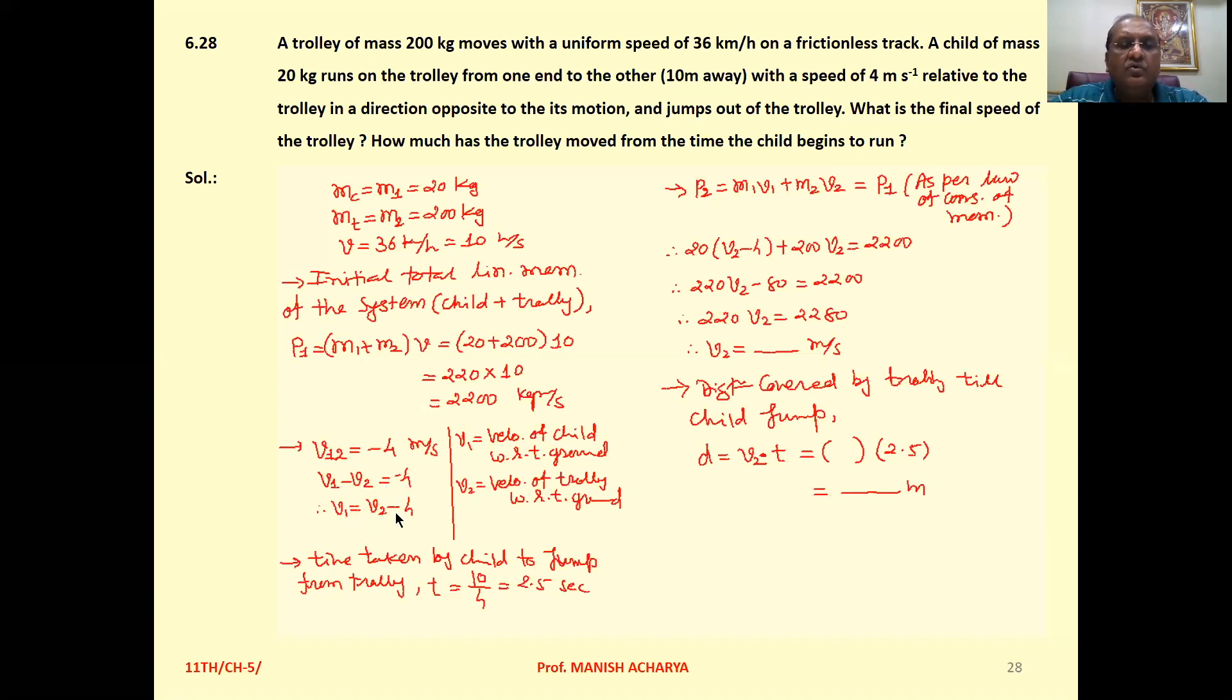So V1 = V2 - 4. We are interested in the velocity of the trolley because we want to find the distance covered by the trolley and its final speed.